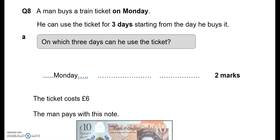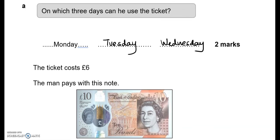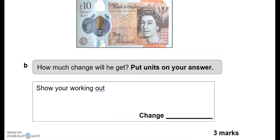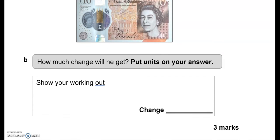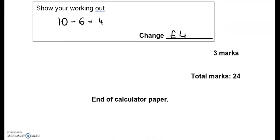Question 8. A man buys a ticket on Monday. You can use the ticket for 3 days starting from the day he buys it. On which 3 days can you use the ticket? So we've got Monday, then Tuesday, then Wednesday. The ticket costs £6. The man pays with this note. How much change will he get? Put units on your answer. So take away 6, that leaves us with 4. So 4 pounds. And this is the end of the paper.